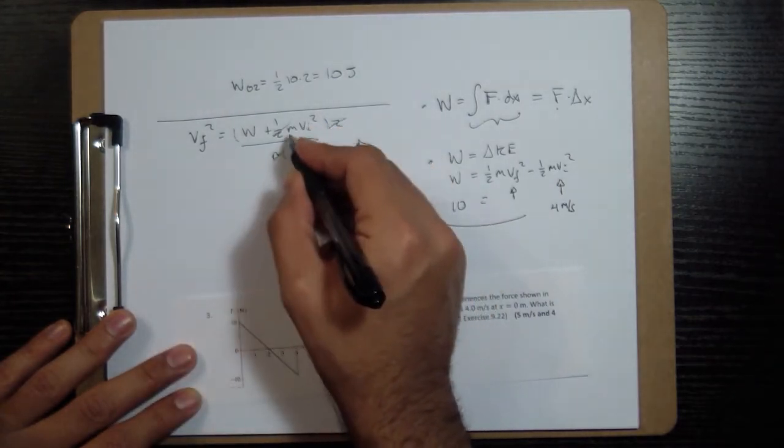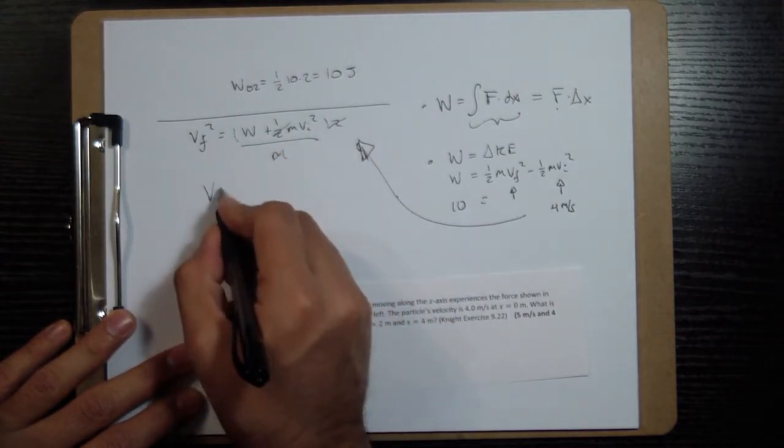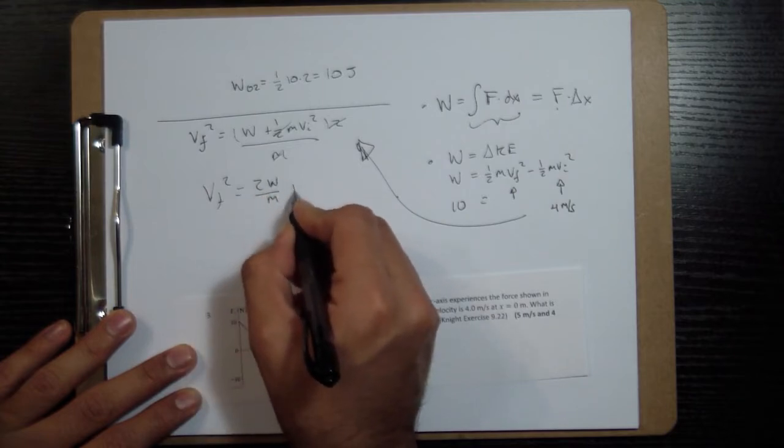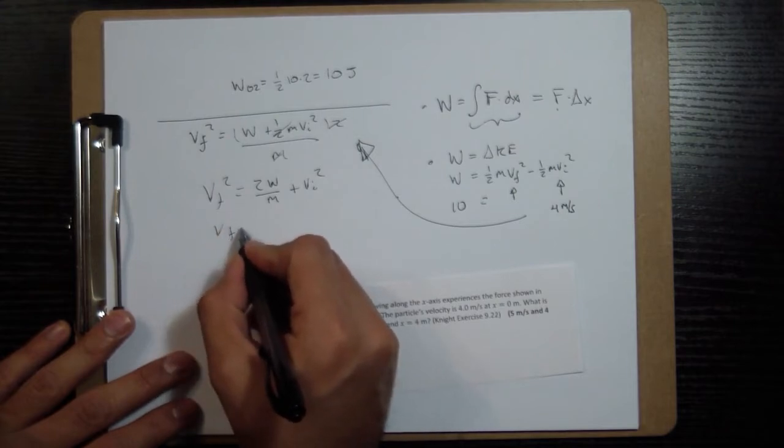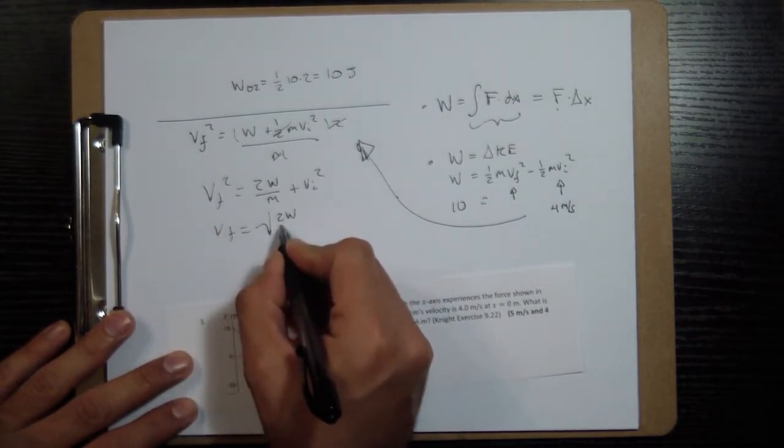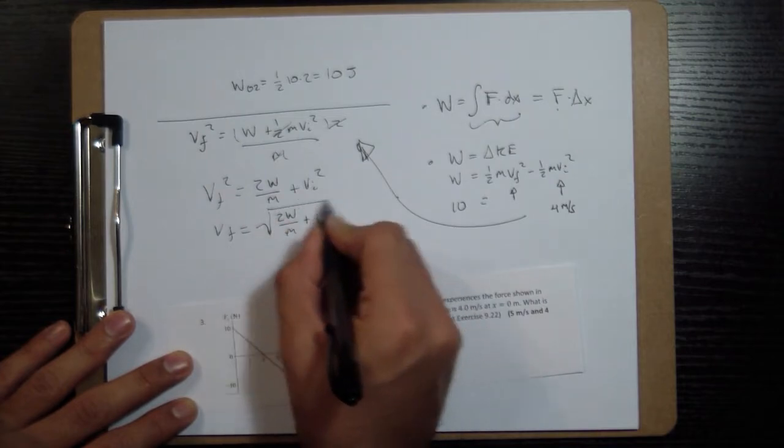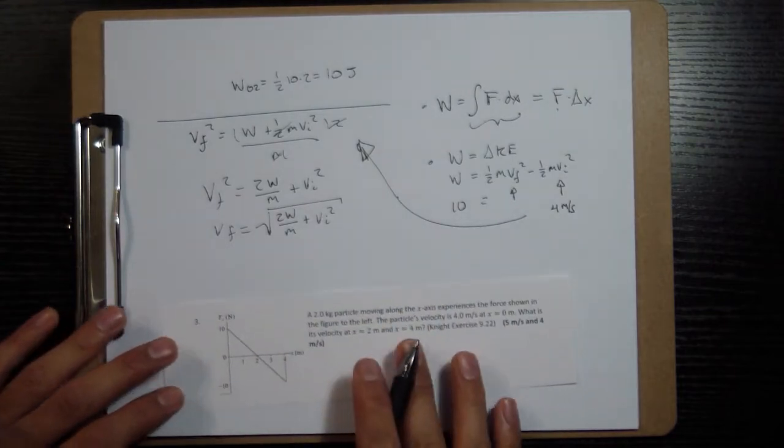That's going to cancel out this half, the m's here are going to cancel, it's going to leave me with a 2w and an m over here. I'll just write it out: 2 times the work over the mass plus vi squared and then finally take a square root. 2 times the work over the mass plus vi squared, that is our equation to figure out the final velocity at a certain point.